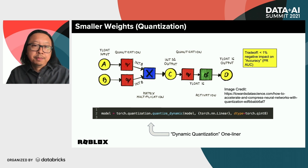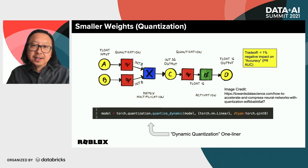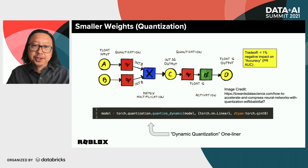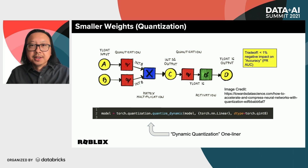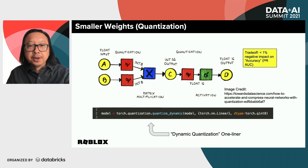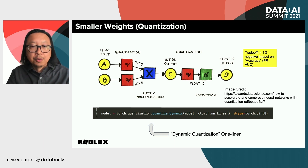Quantization involves improving the efficiency of deep learning computations through smaller representations of model weights — for example, representing 32-bit floating point weights as 8-bit integers. The specific technique we use is called dynamic quantization, which involves quantizing weights after training rather than during training, and this turns out to be much easier. In PyTorch, you can do it in just one line: a one-liner to transform select float-32 weights in the DistilBERT model into int-8 so that at inference time these smaller weights are used.